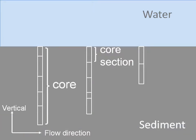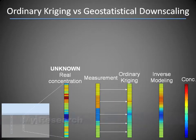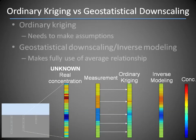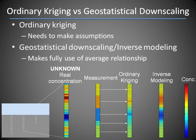My goal is to use these non-uniform datasets to better forecast water quality conditions. In my project, I use information collected from basic sediment core sections. By applying geostatistical downscaling to the non-average measurements, I am able to create a fine resolution attribute distribution.